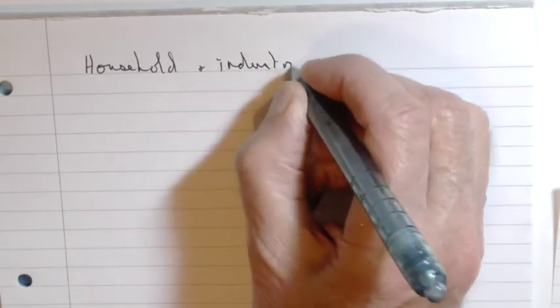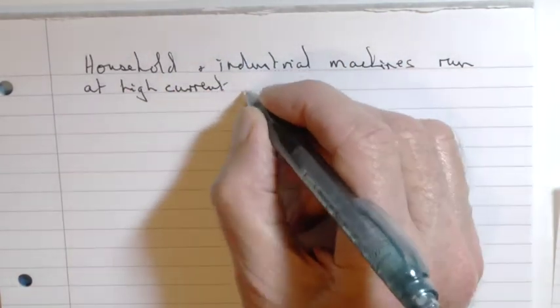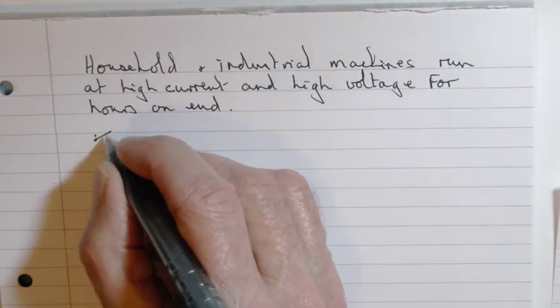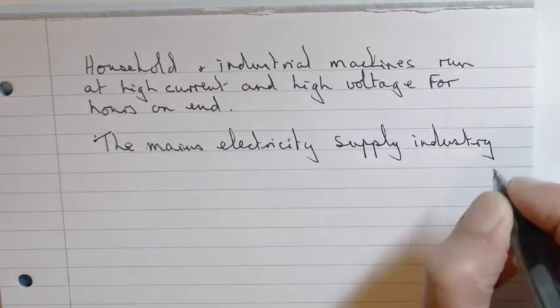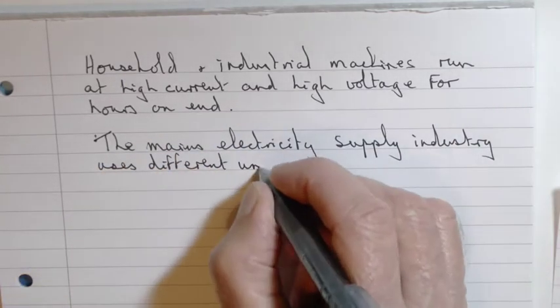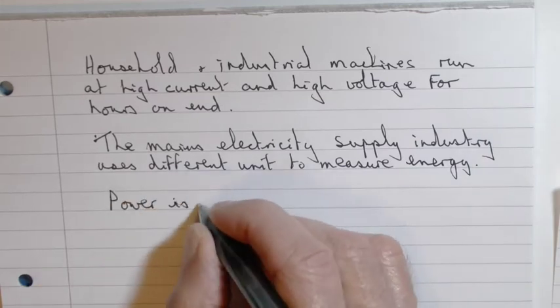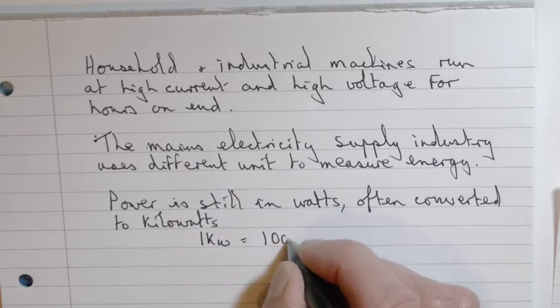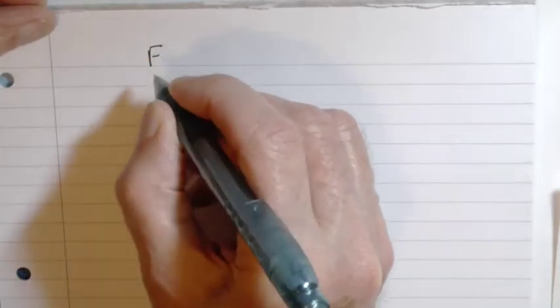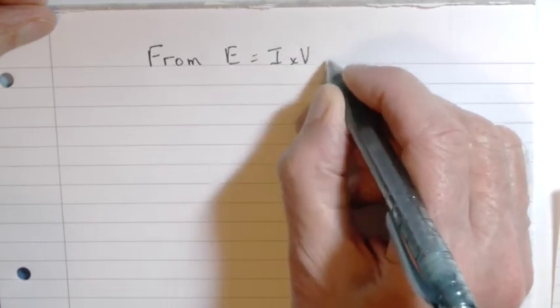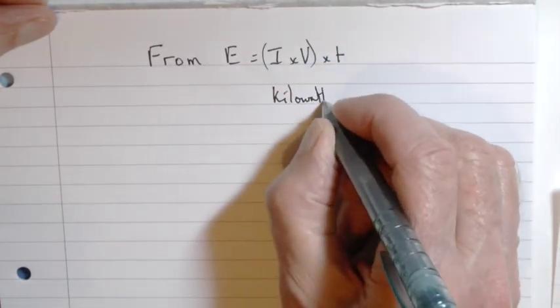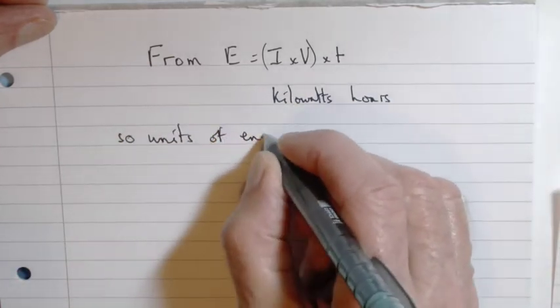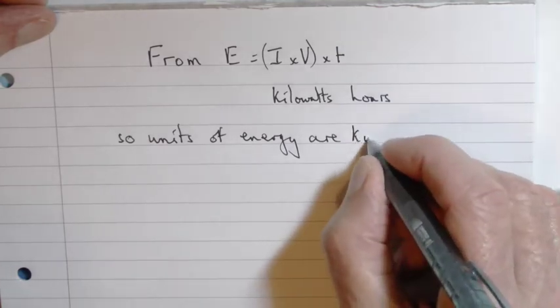Joules are the standard units in science for energy, but in household and industrial machines which run at a high current, high voltage for a long time, that unit is too small. Although the unit for energy supply is changed, the main unit of power is still watts, although often expressed as kilowatts—that's a thousand watts. Using the original equation that energy is current times voltage times time, so current times voltage is power. Remember, if that's expressed in kilowatts and time in hours, then we get a unit of energy of kilowatt-hours.